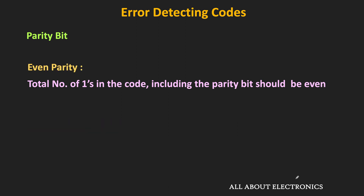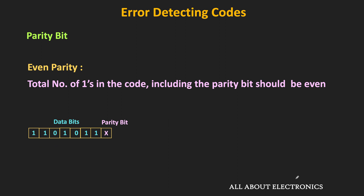Similarly, in case of even parity, the total number of ones in the code including the parity bit should be equal to even. For example, in the data bits, if the total number of ones are even, then for even parity, this parity bit will be set as 1. On the other hand, if the total number of ones in the data bits is equal to even, then this parity bit will be set as 0. So in this way, by calculating the total number of ones in the data bits, this parity bit is set.